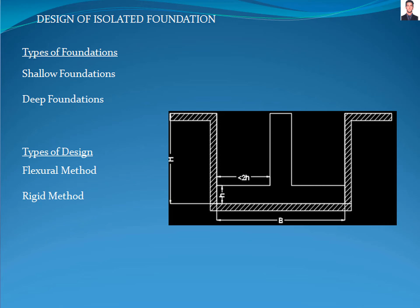The isolated foundations are divided into two types: shallow and deep foundations. Shallow foundations occur when the width of the foundation is greater than the depth of the foundation, and deep foundations when it is the other way.